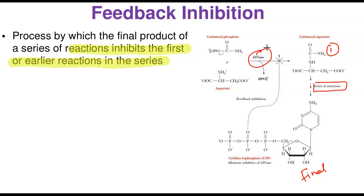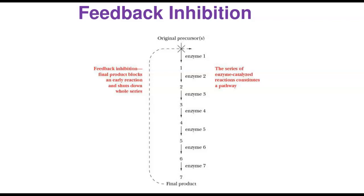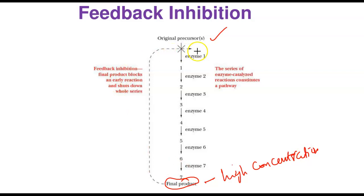CTP binds to the regulatory or allosteric site of aspartate transcarbamoylase, slowing down the reaction. This allosteric inhibition provides an efficient way of regulating metabolism because the enzyme has more than one subunit — sites for both activators or inhibitors and the substrate. In a generic feedback inhibition pathway, a precursor goes through a series of enzyme steps, and when the final product accumulates, it goes back to inhibit an early enzyme and shut down the whole system.